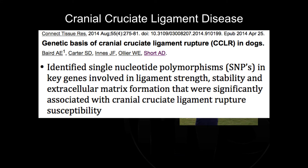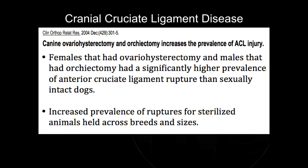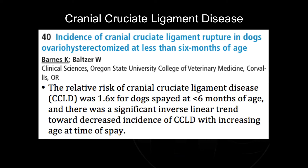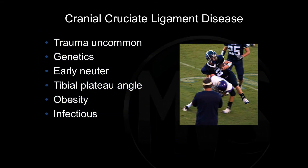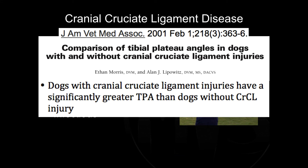Here is some evidence highlighting those possible causes. One study discusses the genetic basis for this injury. Another study discusses early spaying as a possible increased risk for ACL tear — showing it increases risk by 1.6 times if the dog was spayed before six months of age. A comparison study looking at tibial plateau angles shows that the greater the angle, the more likely the dog is to experience a CCL injury. Note that CRCL — cranial cruciate ligament — is the scientific term, distinguished from the caudal cruciate ligament with the designation 'R' when using CCL in scientific literature.